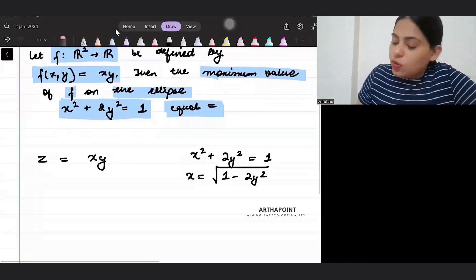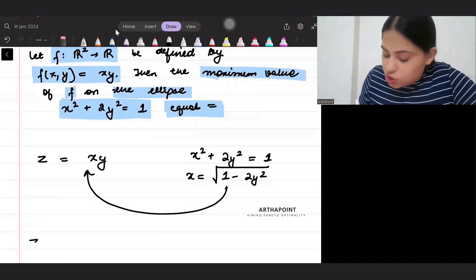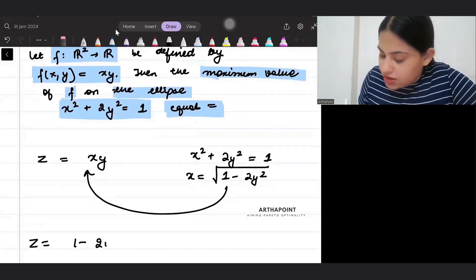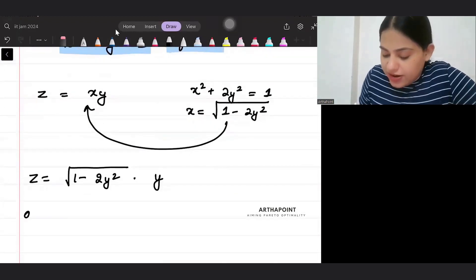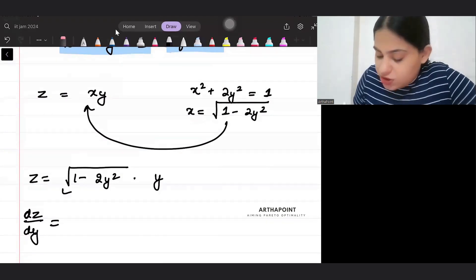You can go ahead and plug this value here, so your z will come as 1 minus 2 y square under root into y. Everything is in terms of y. Find out the maxima, dz by dy. So differentiate the first function.